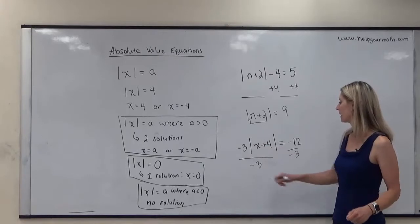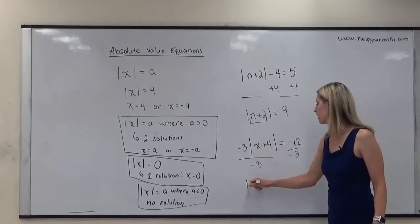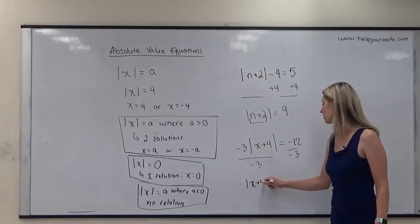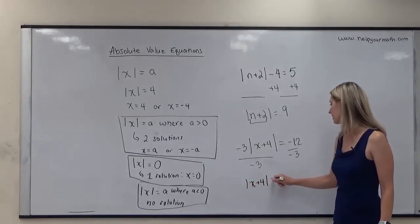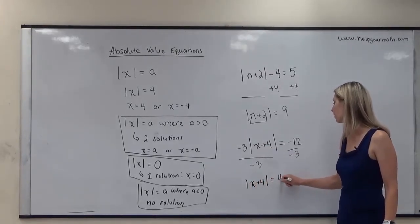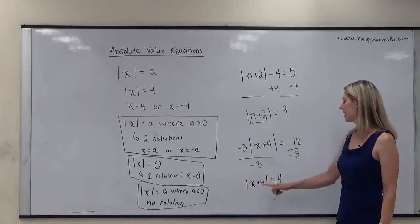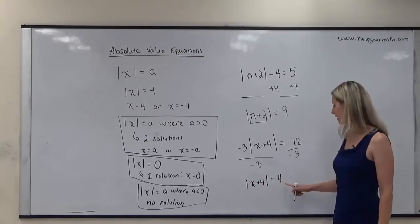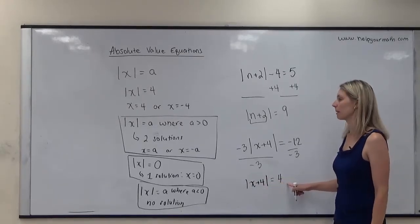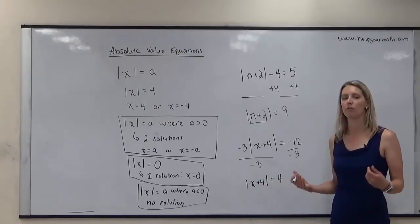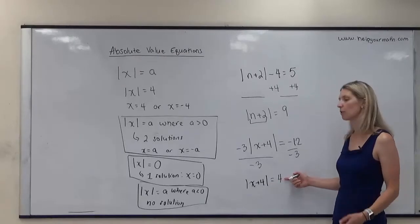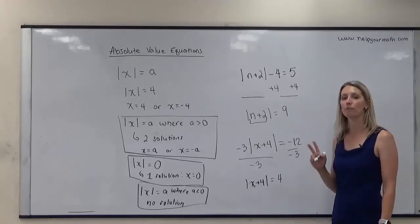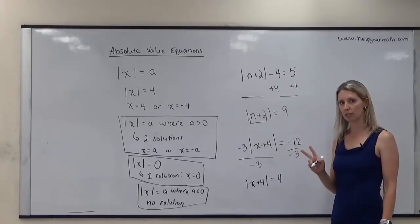Dividing both sides by negative 3 gives us the absolute value of (x + 4) equals 4. Now the absolute value is isolated and equals something positive, so this equation has two solutions.